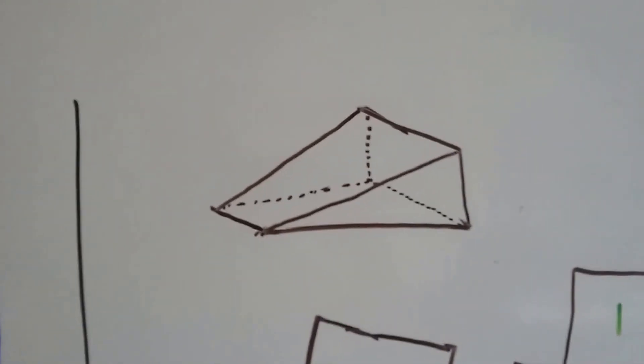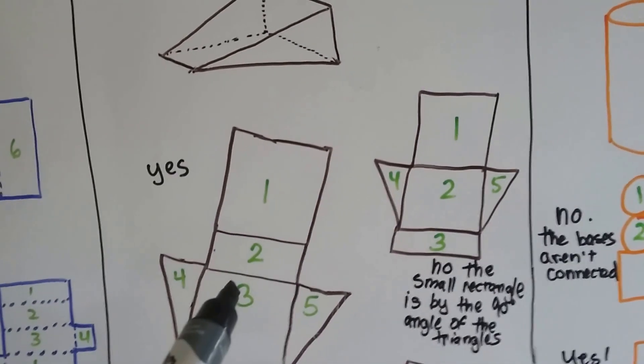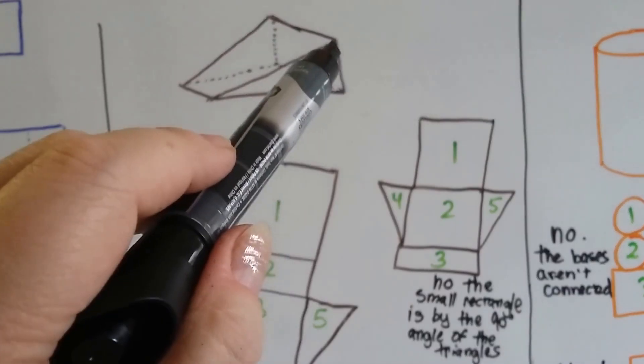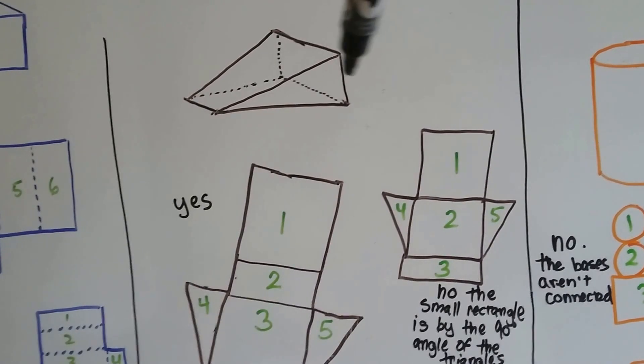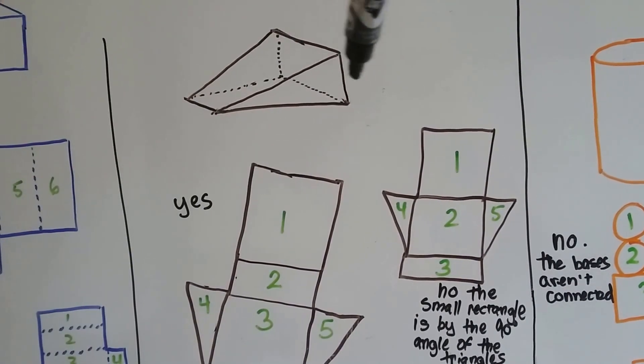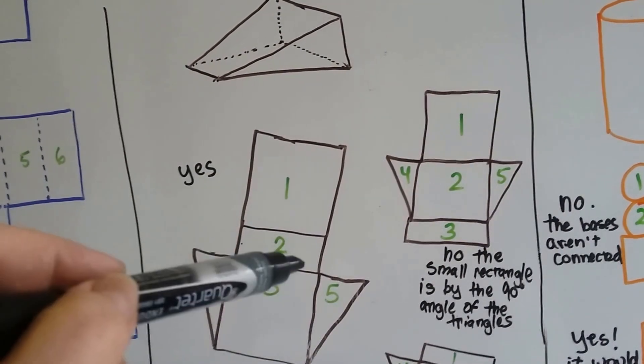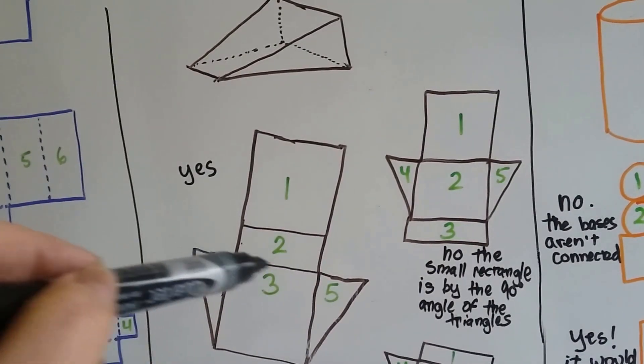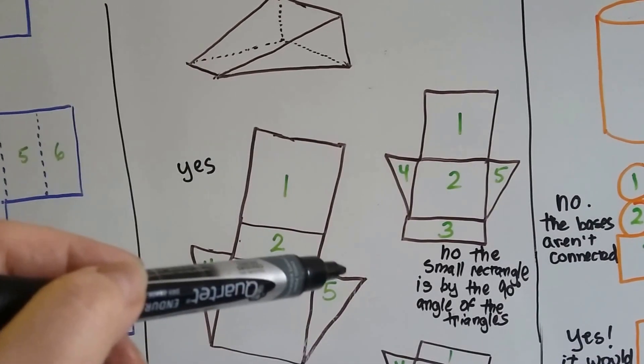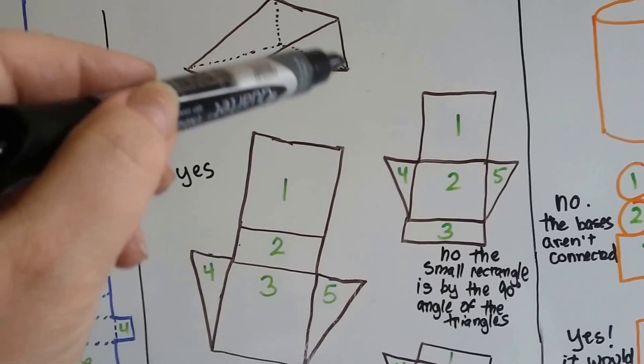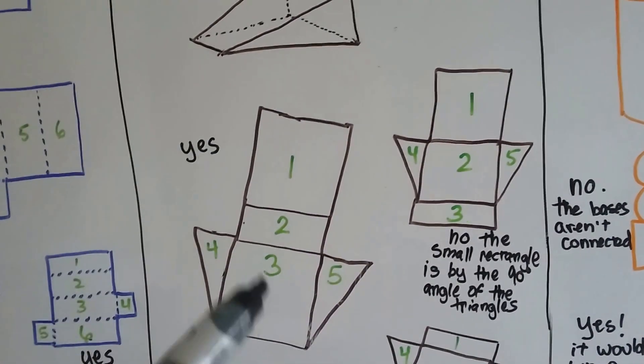So for our wedge of cheese, what would it look like unfolded? Yes, this would be right. If you look, it's got a 90 degree angle right here that is touching this long skinny rectangle in the back. Here's our long skinny rectangle in the back. And if we folded this right along this line in between 2 and 3, this would fold up and touch the number 5 rectangle right there. So that one would work.